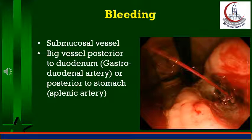Signs of hypovolemic shock include hypotension, tachypnea, dry tongue, and cold periphery. The patient should be resuscitated; blood samples taken for blood grouping and cross-matching, and for estimation of serum electrolytes, blood urea, serum creatinine, and platelet count.